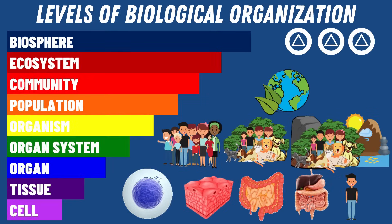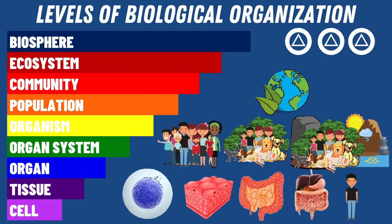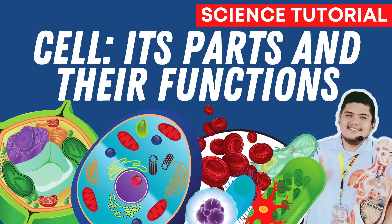In our last video, we learned that living things are highly organized and structured. We talked about the different levels of biological organization. If you haven't watched our video about the different levels of biological organization, you may pause this video to watch it. The link is posted in the description box. In this video, we are going to study in detail the simplest level of biological organization, which is the cell. We are going to learn its different parts and their functions.